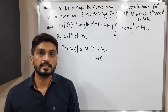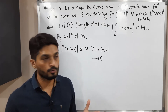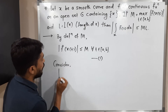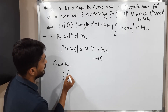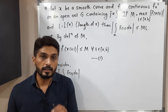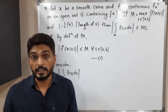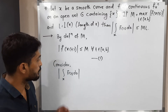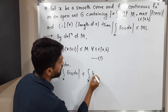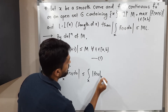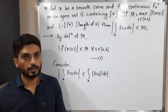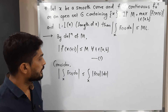Now we have to prove this inequality. We will start with the left hand side and bring in the right hand side. Consider mod of the integration over x of f of z dz. From the previous video we have already proved one inequality, which says this is less than or equal to the integration over x of mod f of z into mod dz.